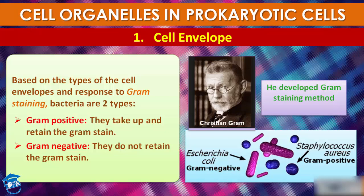Bacteria can be classified into two groups based on the difference in cell envelope and the manner in which they respond to staining. Based on the cell envelope type and response to Gram staining, bacteria are of two types: Gram-positive and Gram-negative. Gram-positive bacteria take up and retain Gram stain, whereas Gram-negative bacteria do not retain the Gram stain.